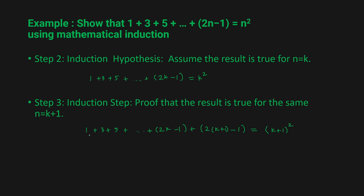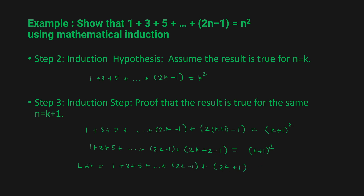When you simplify this, you get 1 + 3 + 5 + ... + (2k - 1) + (2k + 1) = (k + 1)². So the LHS is 1 + 3 + 5 + ... + (2k - 1) + (2k + 1), because 2 - 1 = 1, and the RHS is (k + 1)². This completes the setup for step 3.